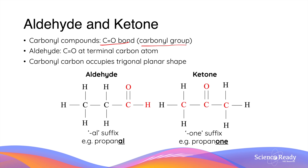Aldehyde and ketone functional groups are very similar, so it is very important to learn how to differentiate between them. In an aldehyde molecule, the carbonyl group is at the terminal end of the organic molecule. Therefore, the carbonyl carbon is bonded to a carbon atom and a hydrogen atom. In contrast, the carbonyl carbon in a ketone molecule is bonded to two adjacent carbon atoms and no hydrogen atoms. In both functional groups, the carbonyl carbon occupies a trigonal planar shape because it is connected to three other atoms.